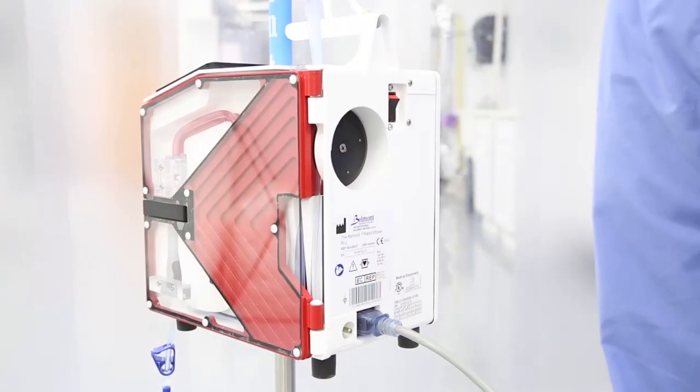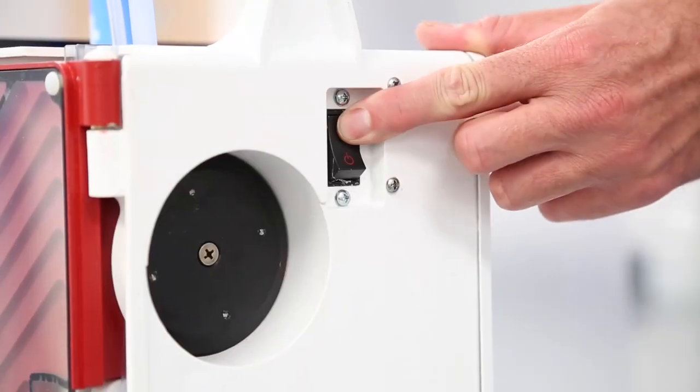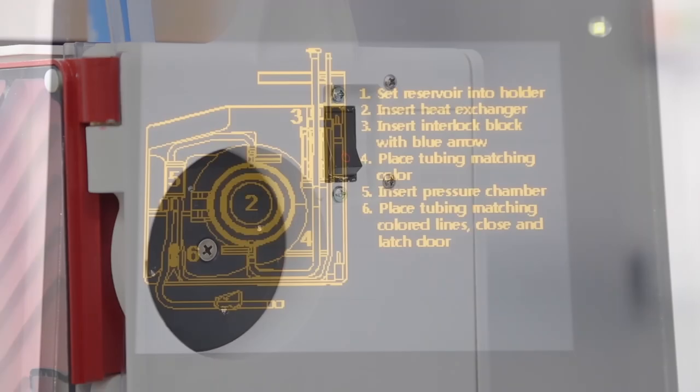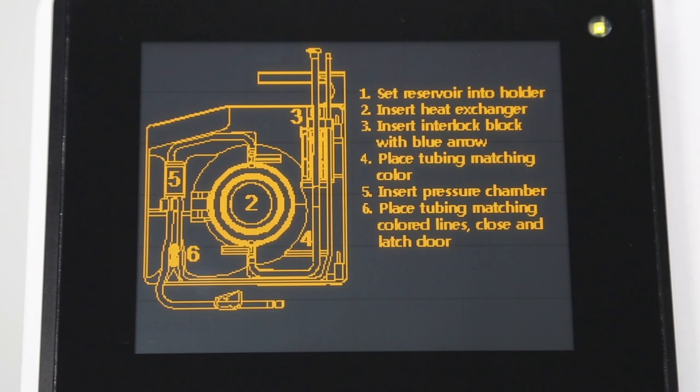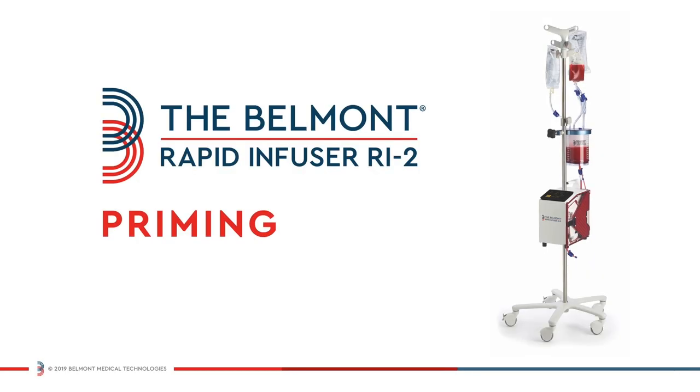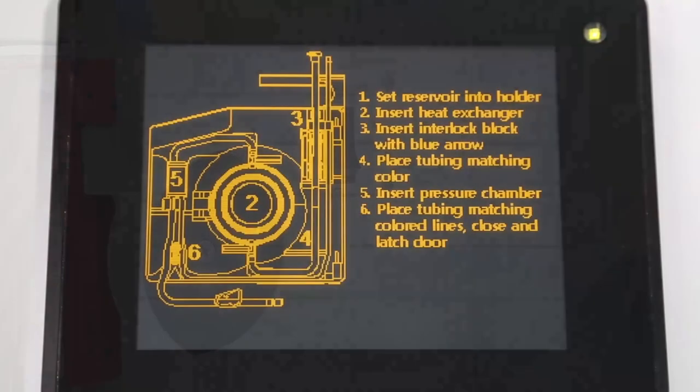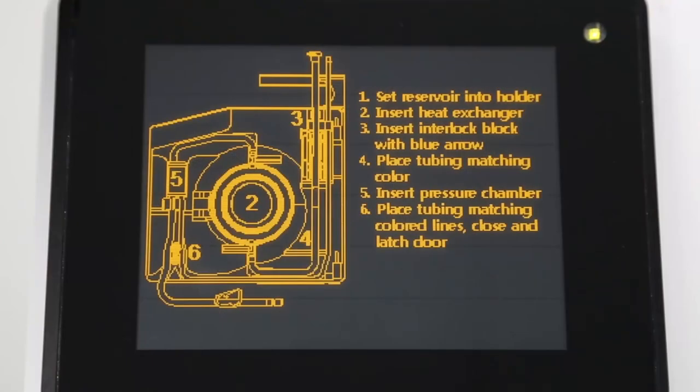You are ready to power on the system. Press the power button firmly to the on position which is located on the back of the device. After a brief self-test, operation instructions will be displayed on the screen. When first switched on, the screen will display instructions for installing the disposable set.